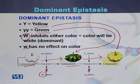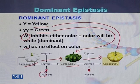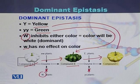In dominant epistasis there are two different genes: one gene is for yellow color and the second gene is for green color. But there is a third gene — if that third gene is in dominant form, the color will be converted. If it is in recessive form, the enzyme will not be able to convert from white into green, and later green into yellow color.